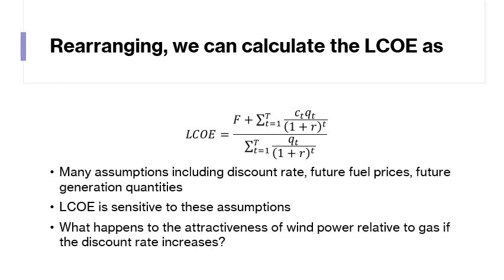For example, what happens to the attractiveness of wind power relative to gas if the discount rate increases? For wind power, the marginal cost CT is essentially zero, so in the LCOE numerator we are only concerned with the fixed cost F — discounting the marginal cost makes no difference for wind producers. It will make a difference for natural gas producers because they have a positive CT term.